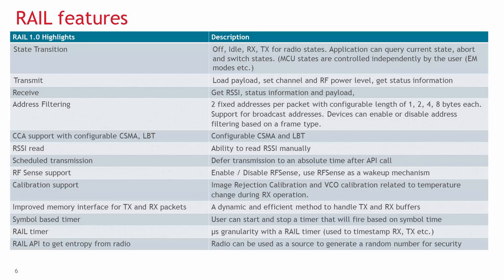These are some highlights from the features supported by the initial RAIL release. Where possible, all features currently implemented for the EFR32 will be implemented for future ICs, allowing for easy migration of all RAIL-based applications. Additionally, the following features are planned for future RAIL releases: duty cycled receive operation, frequency hopping receive operation, acknowledgements, antenna diversity, and direct mode.